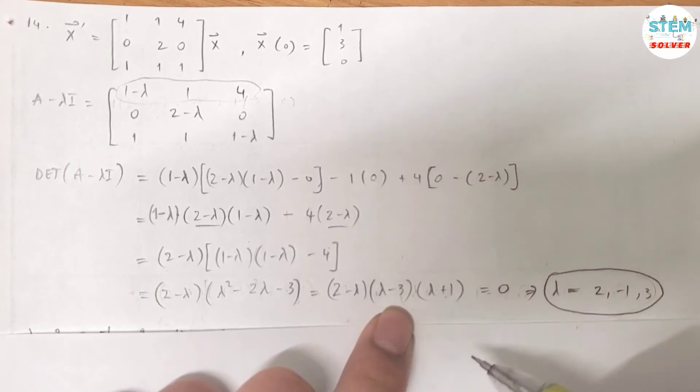You will get this factor, set it equal to 0 and then solve for λ. I got λ equals 2, -1, 3. So here's my eigenvalues and with each eigenvalue I will get an eigenvector for it. Let's see what those are.